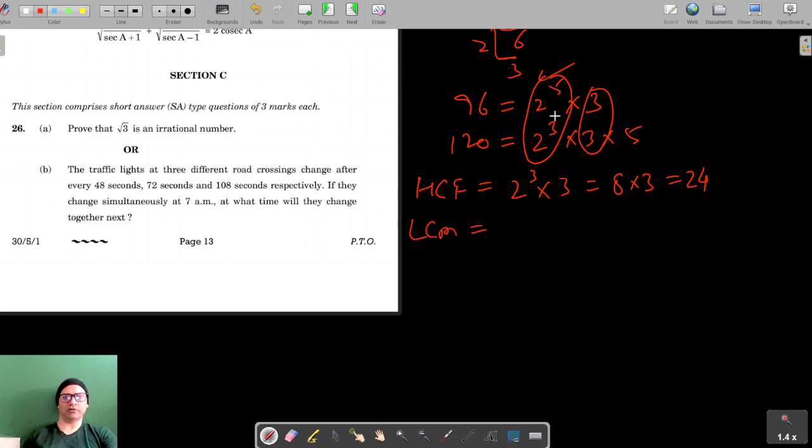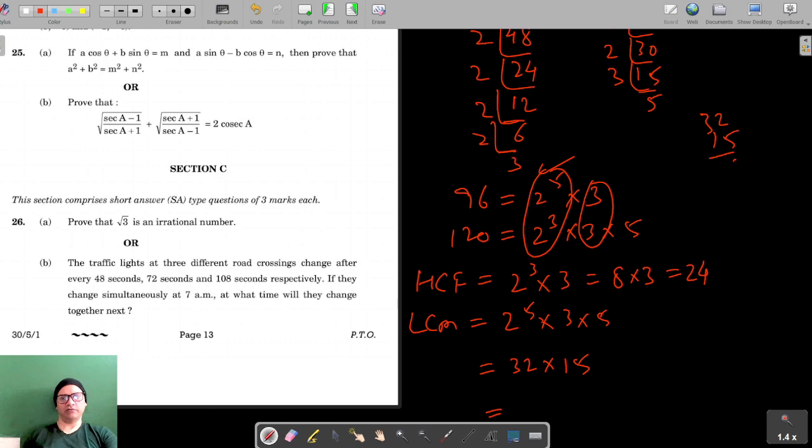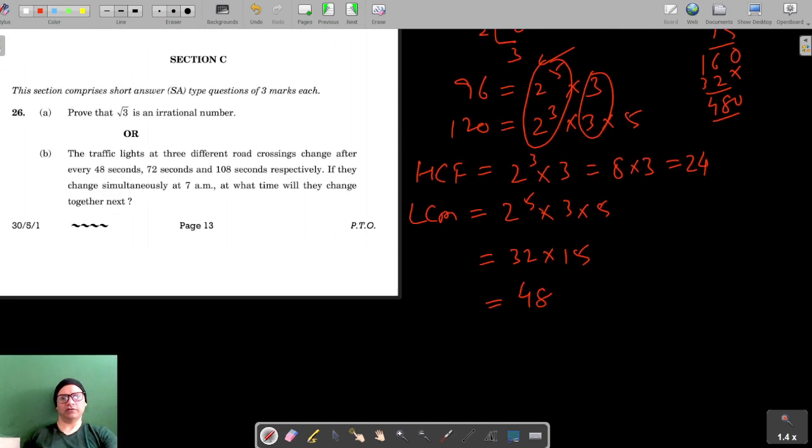Now let's find the LCM. Among the common factors we have to take the highest: 2 raised to the power 5 into 3 into 5. Now 2 raised to the power 5 is 32 into 15 which is equal to 480.